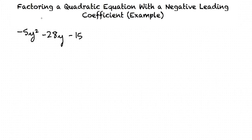Here's an example video for the topic factoring a quadratic equation with a negative leading coefficient. In this example, we will use the method described by the Miller textbook series found in the ALEKS system to factor the quadratic -5y² - 28y - 15.